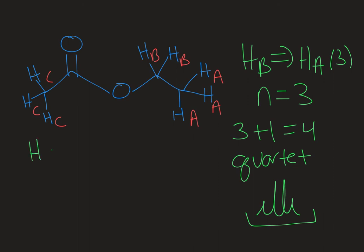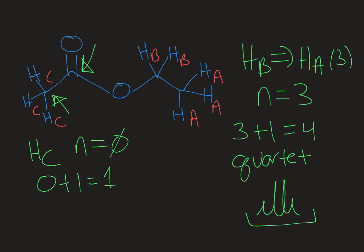Last up, we have HC. The next-door neighbor carbon to HC has four bonds but no hydrogens on it. So in this case N is equal to zero — there are no protons on the carbon next door to HC. Zero plus 1 equals 1, so HC would show up as a singlet: just one peak, no splitting because there are no neighbors. Splitting in a proton NMR tells us a lot about how the molecule is put together, because it tells us about neighboring protons on adjacent carbons.